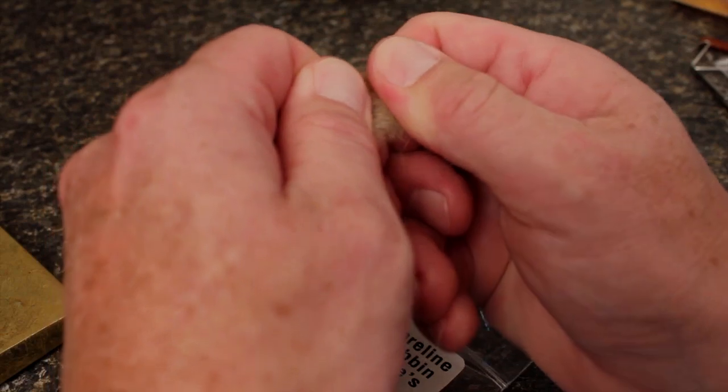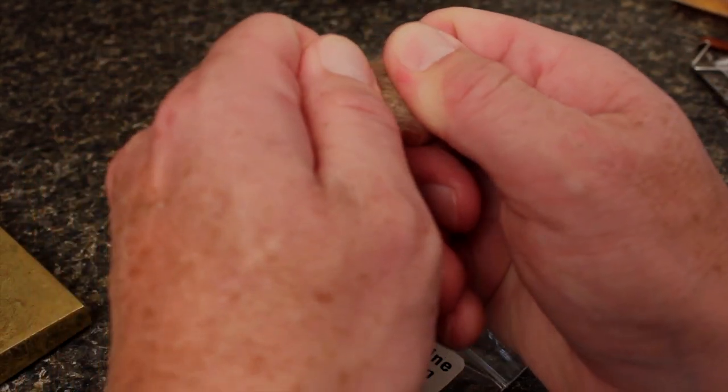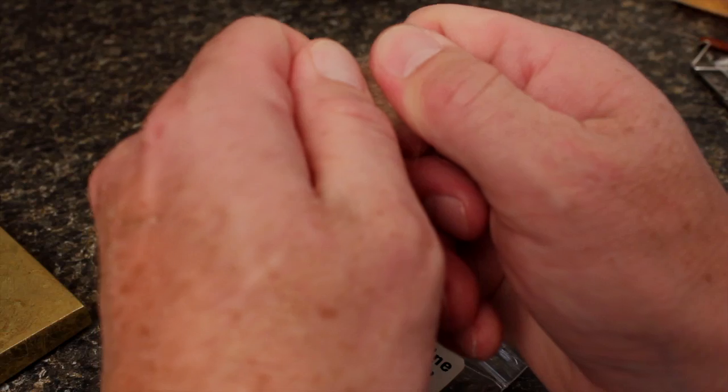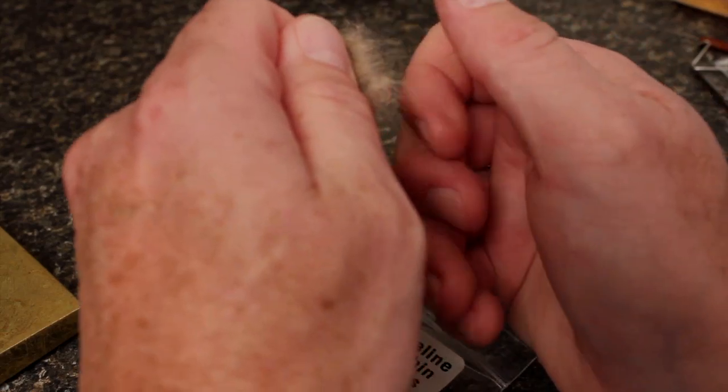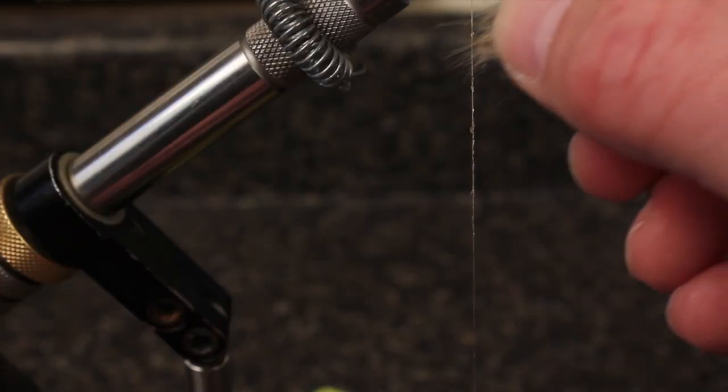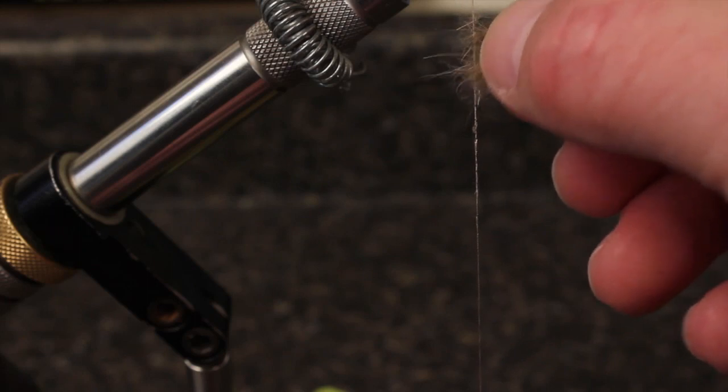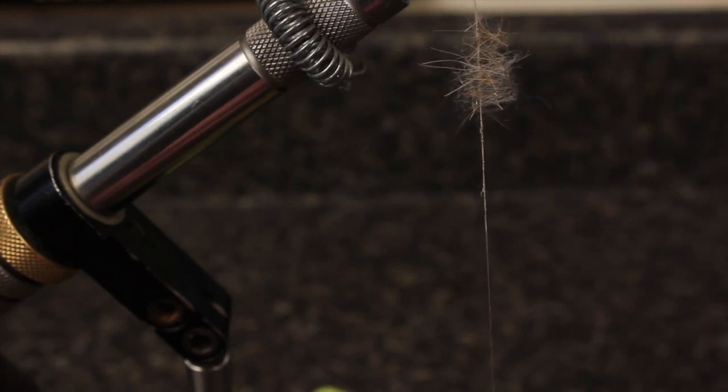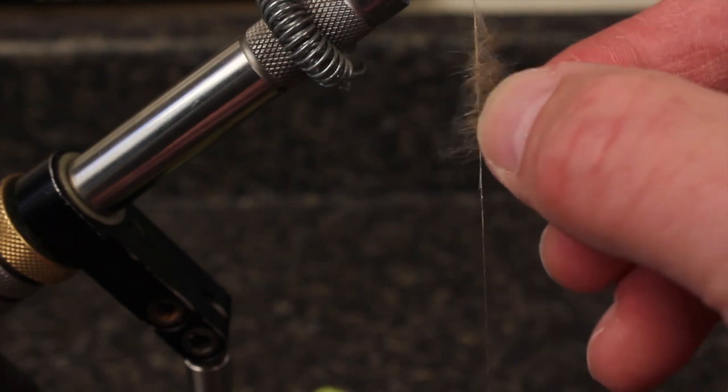Starting with a modest clump of naturally colored hare's ear dubbing material, pull the clump apart numerous times to roughly align the fibers. While pulling out only small sheets at a time, touch dub them to your waxed tying thread. You really don't need much.